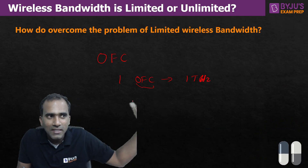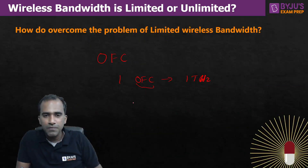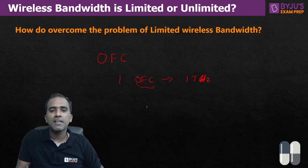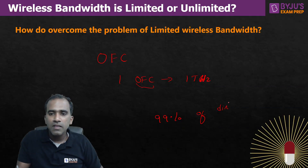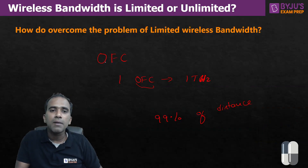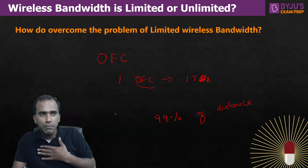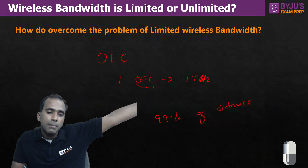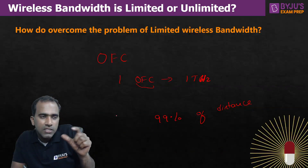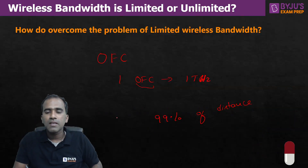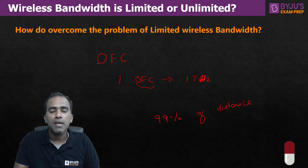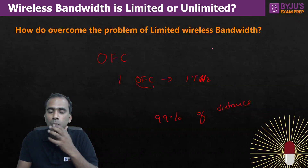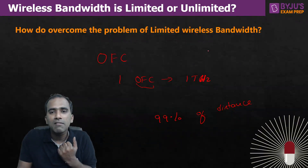Suppose you want to communicate from India to America — over that large distance, 99% of the signal's journey happens through wire, through optical fiber cables. Only the last mile — from you to the tower, or from the tower to the other person in America — happens wirelessly. That small distance is wireless; the rest travels through optical fiber cable.